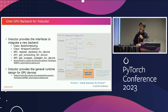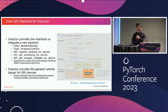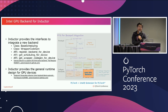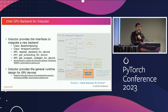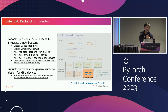For example, we want to reuse the inductor loop IR, the loop fusion optimization, the inline optimization, and so on. This means the Intel GPU back-end just needs to focus on how to produce the performance device code. This integration methodology significantly saves a lot of developer effort for the Intel GPU back-end.